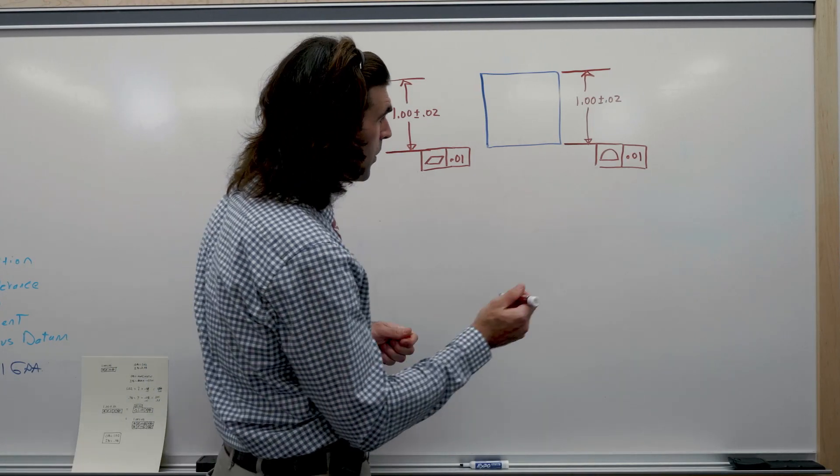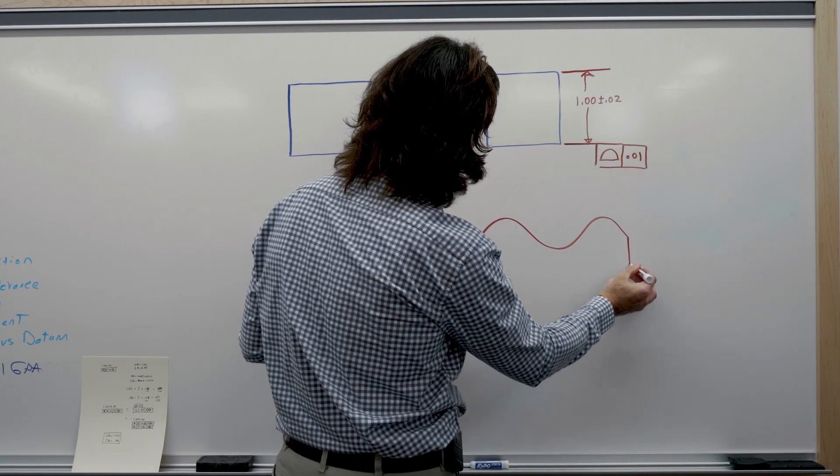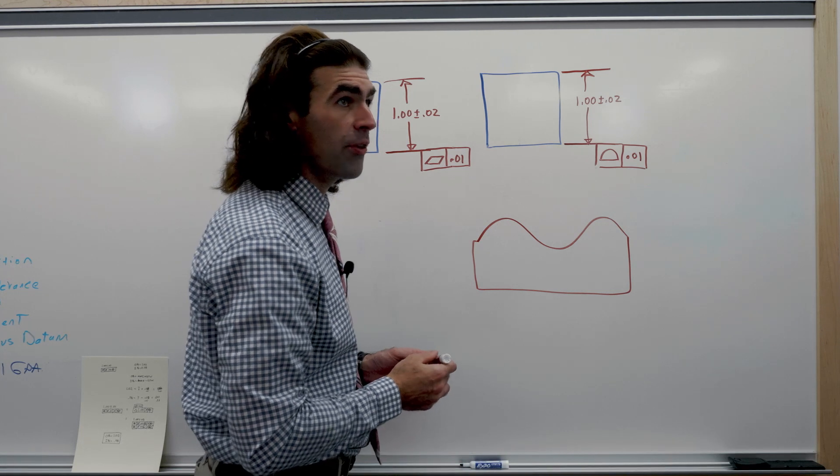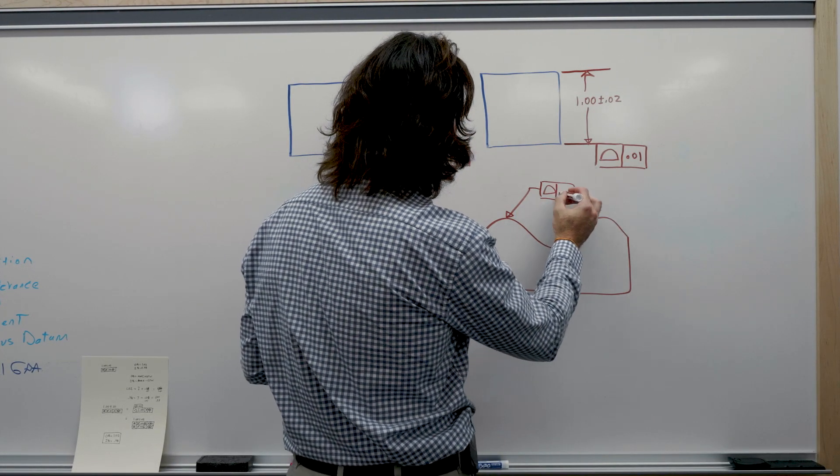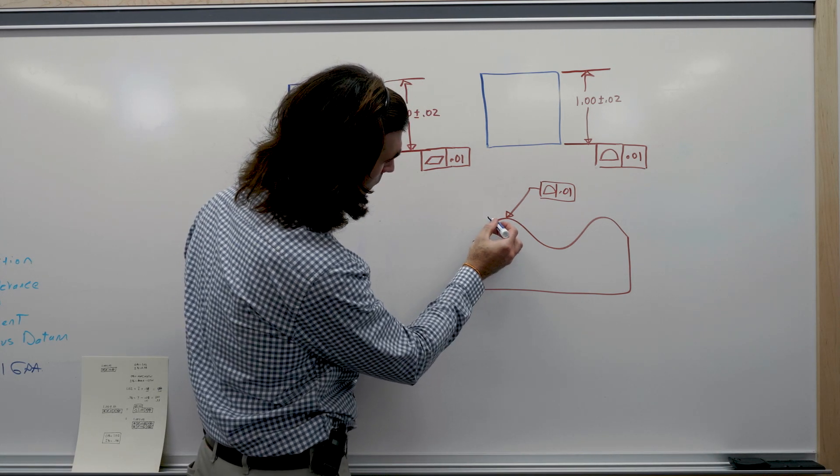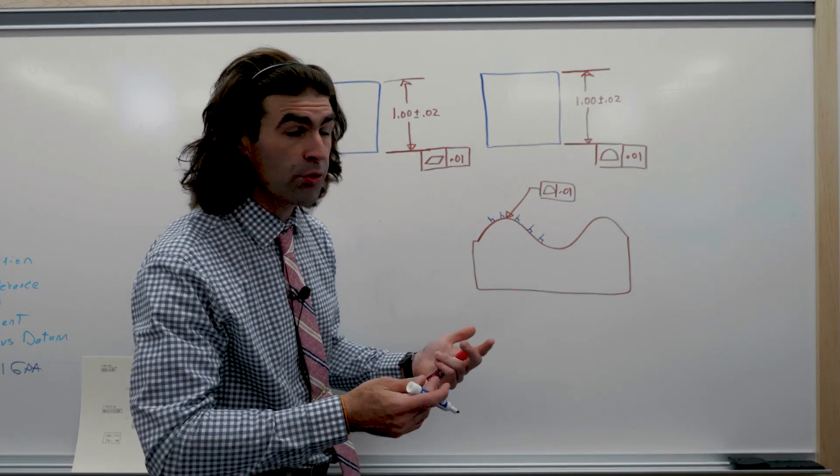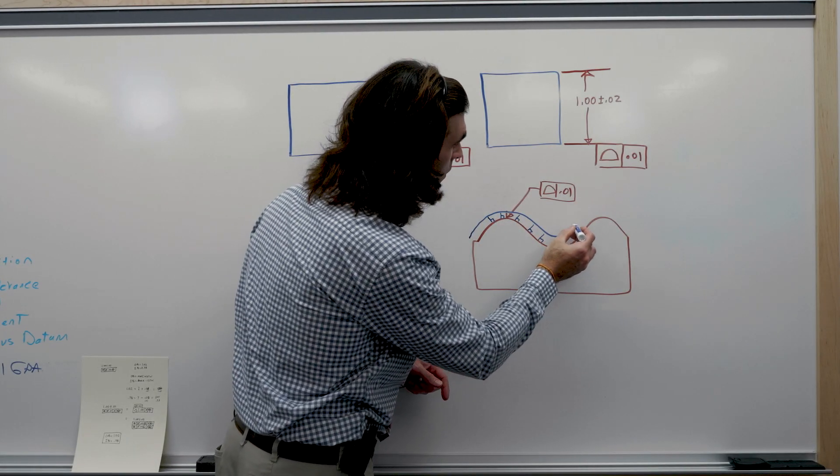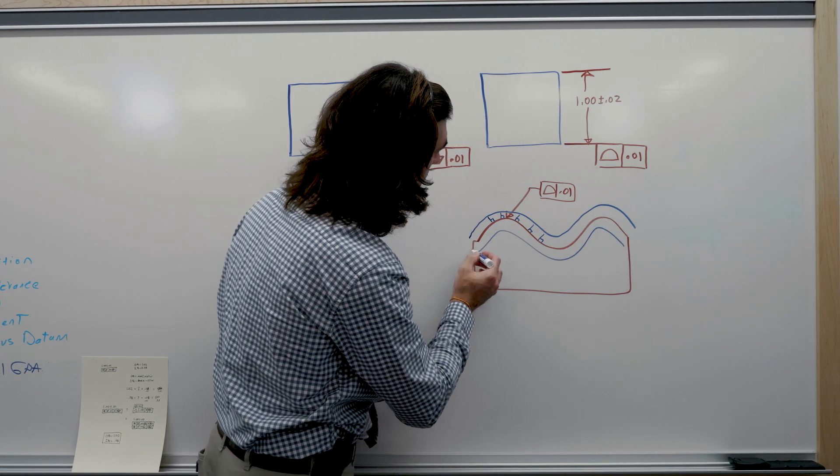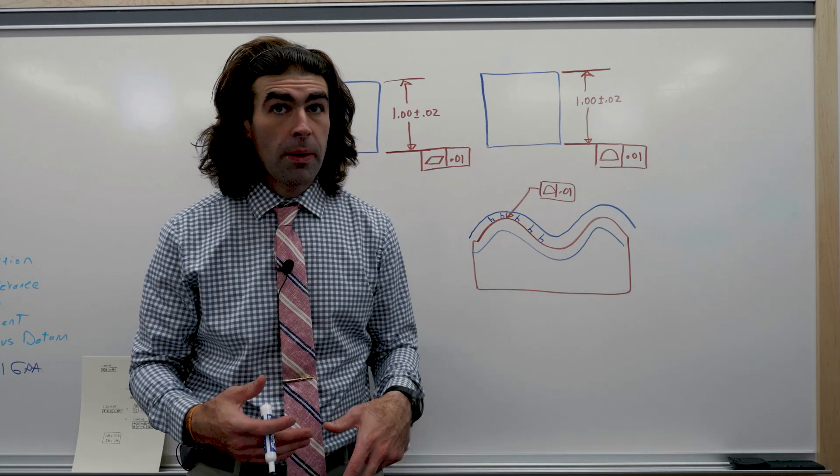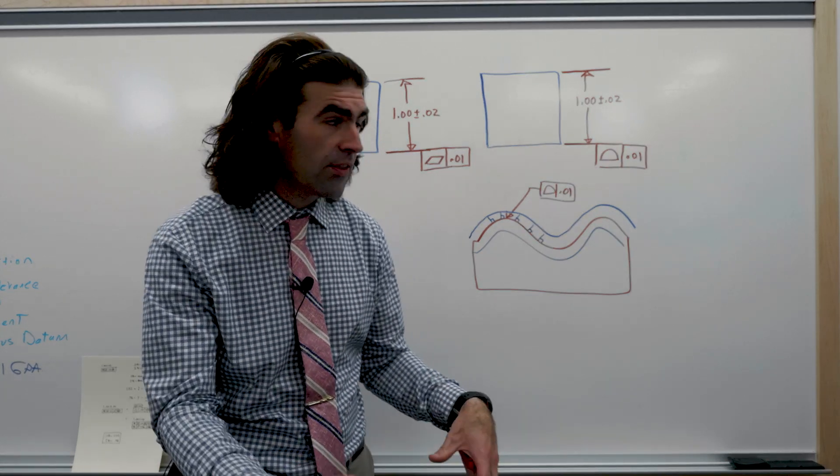So what that means if you have a part like this with a profile tolerance, let's say you got a profile, it means that every point on this part the tolerance zone is perpendicular to the surface. So the tolerance zone just follows the surface right on the inside and the outside. So when it's a flat surface, the definition is different but it means the same thing.